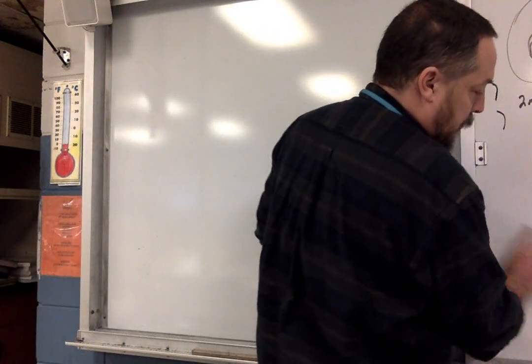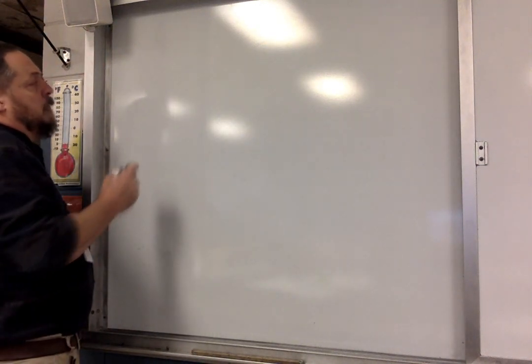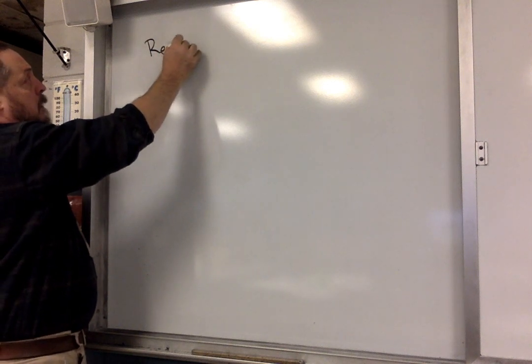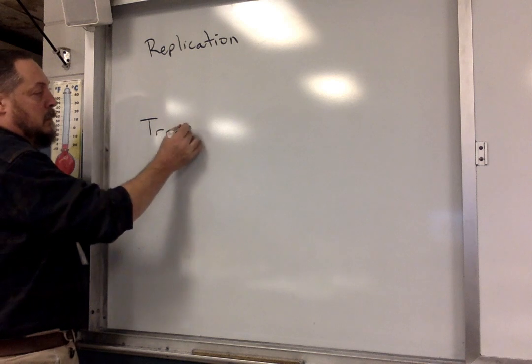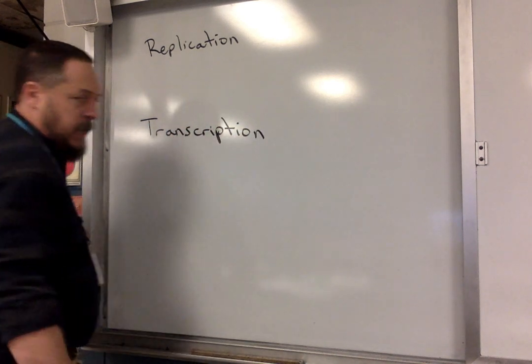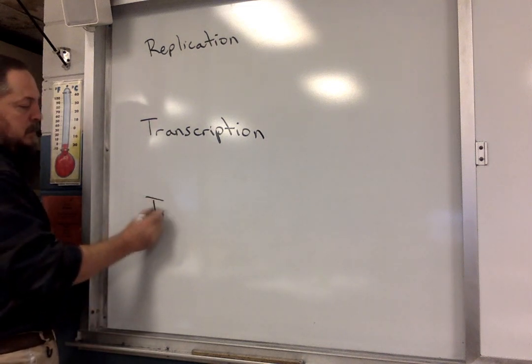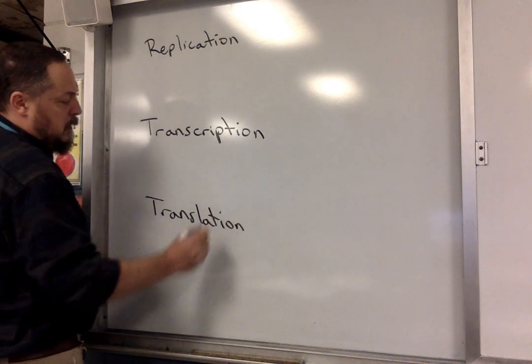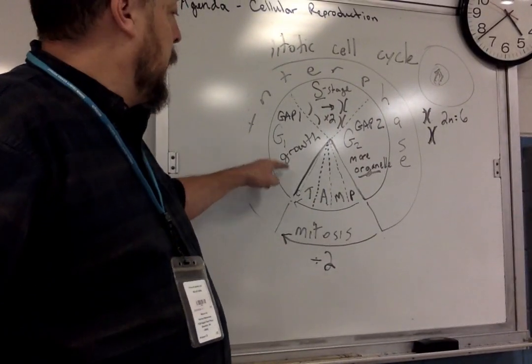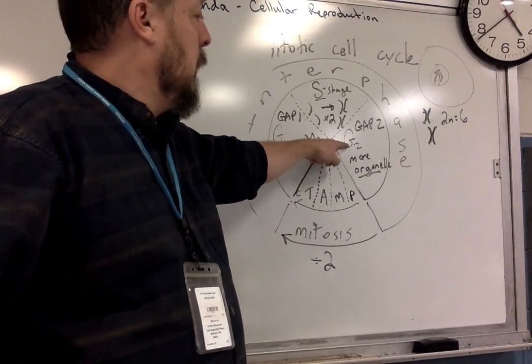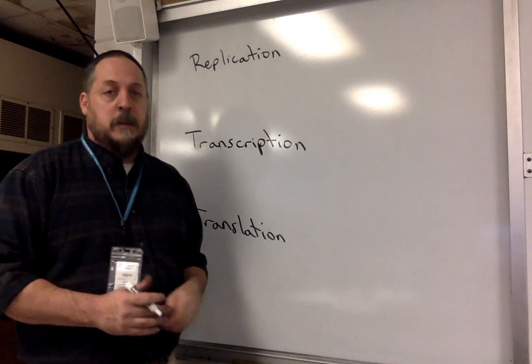In this last video for this unit we're going to talk about protein synthesis. There are a couple of terms that we need to know: replication, transcription, and translation. Protein synthesis occurs during interphase — that's the part of the cell cycle when the cell is growing, and also in Gap 2 when the cell is functioning. The DNA has to provide information that regulates the cell's activities.